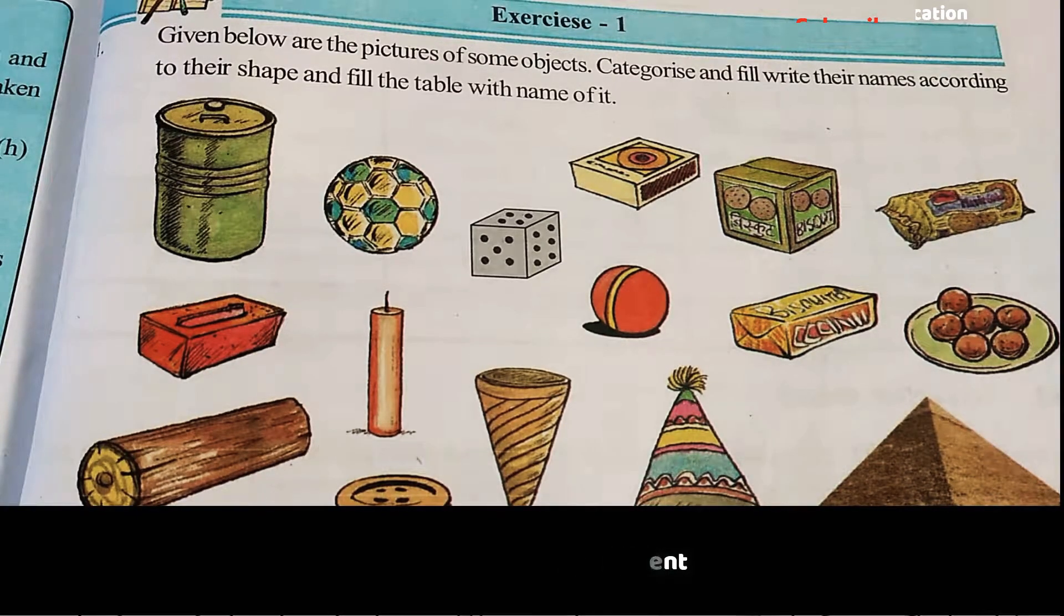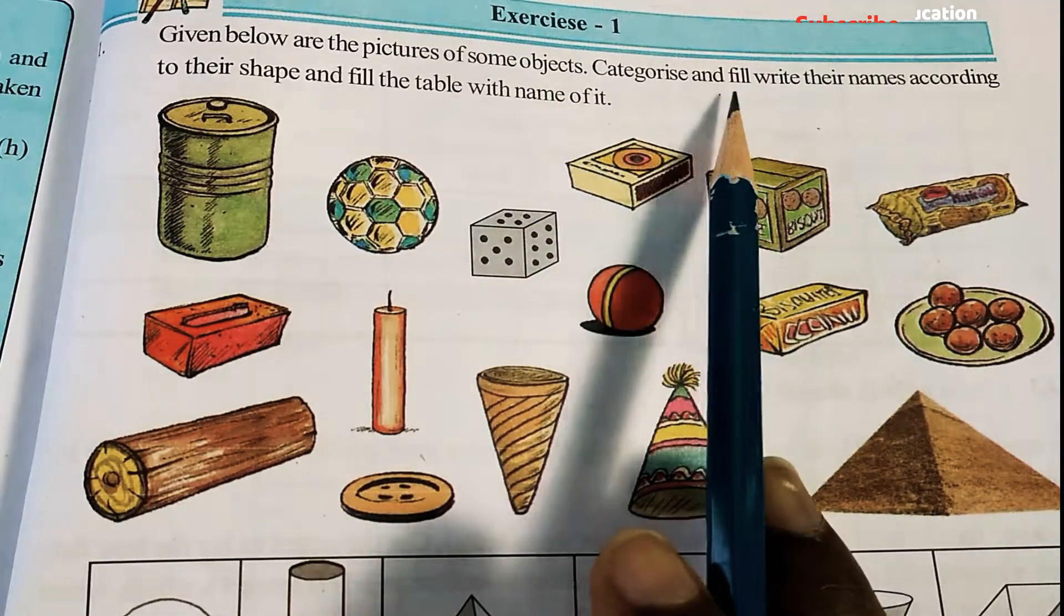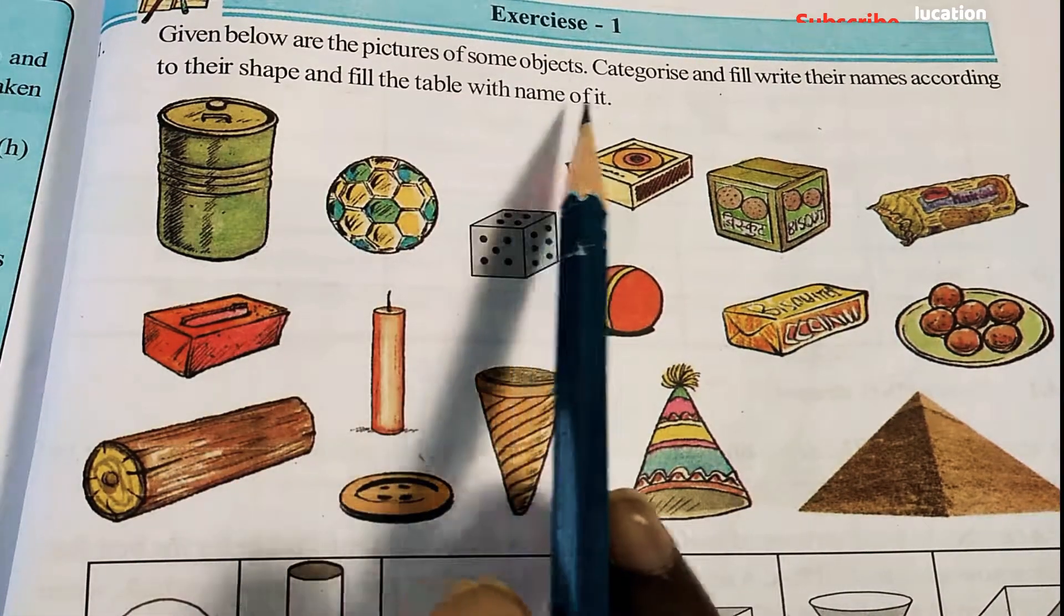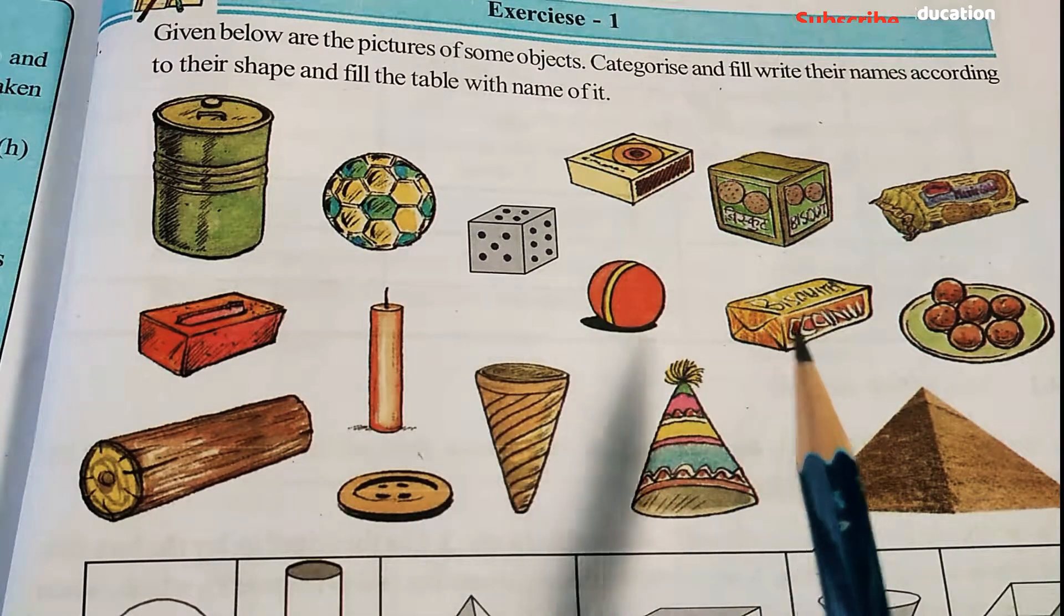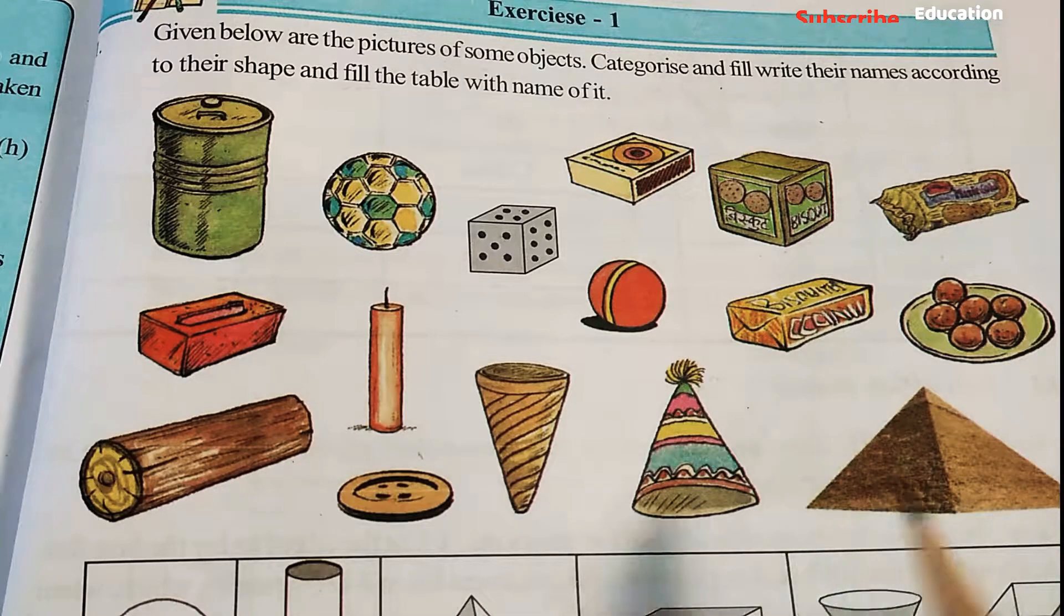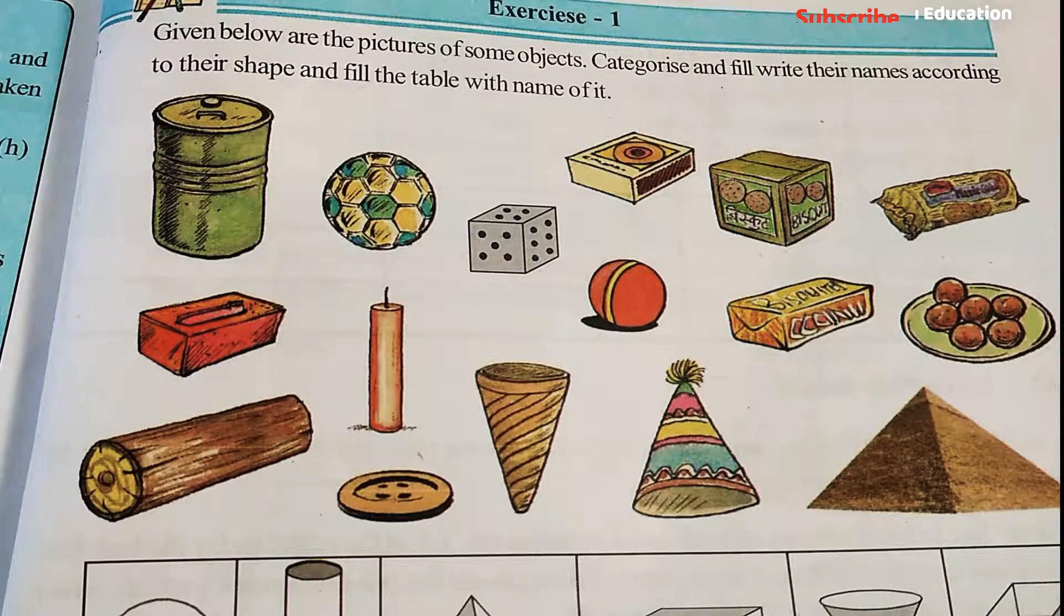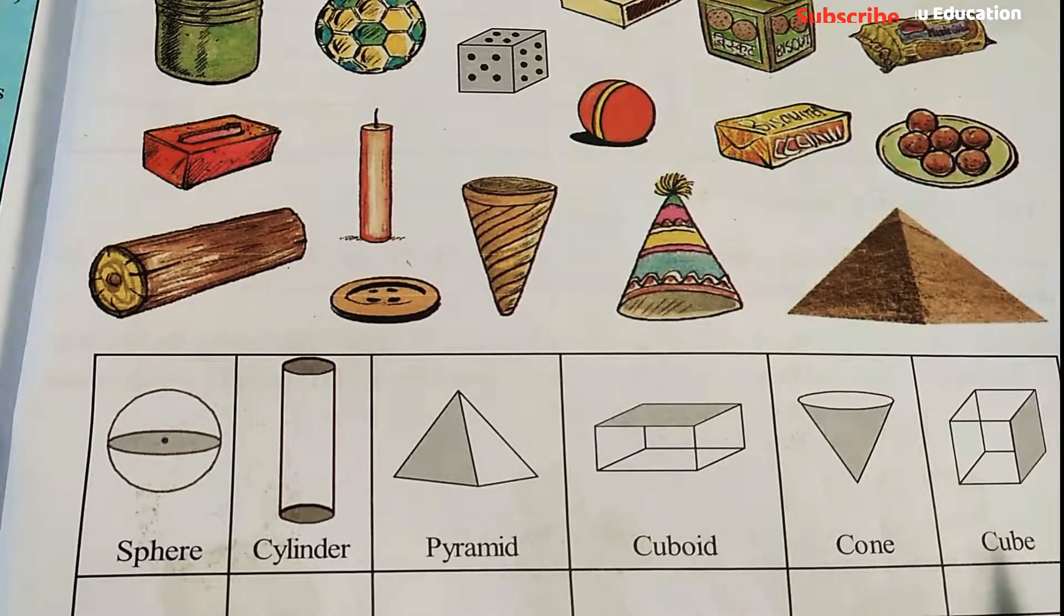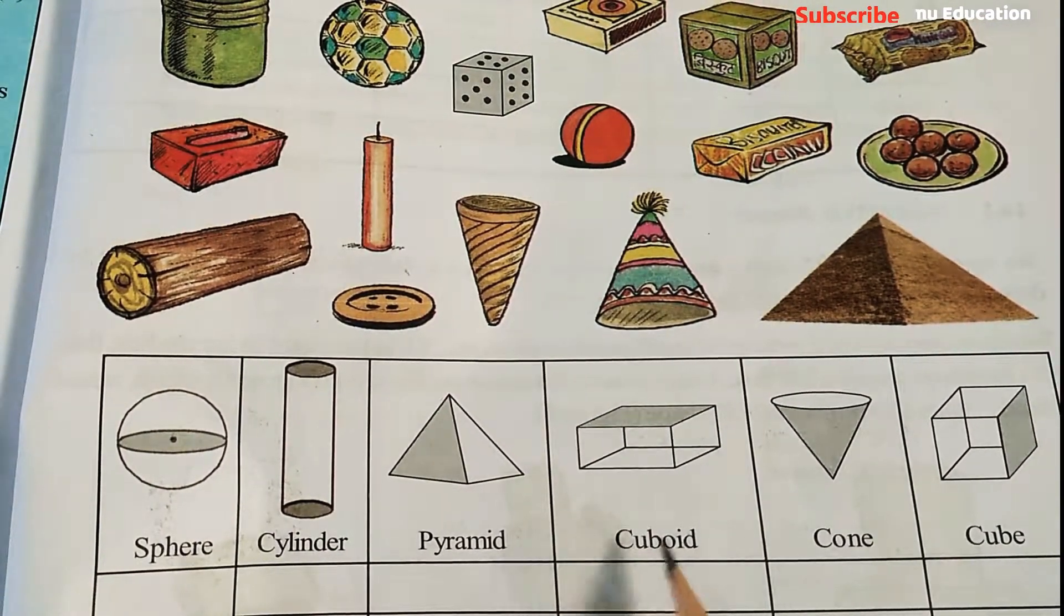In the first exercise, given below are pictures of some objects. Categorize and write their names according to the shape and fill the table with their names. Objects shown include drum, football, dice, matchbox, sweet box, biscuit box, biscuit packet, lettuce, coconut, and biscuits. Based on that shape, we are going to write for the corresponding shapes.